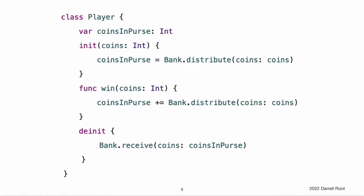Each Player instance is initialized with a starting allowance of a specified number of coins from the Bank during initialization, although a Player instance may receive fewer than that number if not enough coins are available. The Player class defines a win-coins method, which retrieves a certain number of coins from the bank and adds them to the player's purse.